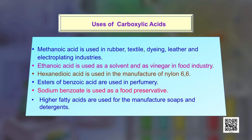Some important uses of carboxylic acids: methanoic acid is used in rubber, textile dyeing, leather, and electroplating industries. Ethanoic acid is used as an antioxidant, solvent, and as vinegar in the food industry. Hexanedioic acid is used in the manufacture of Nylon 6,6. Esters of benzoic acid are used in perfumery, and sodium benzoate is used as a common food preservative. Higher fatty acids are used for manufacture of soaps and detergents.